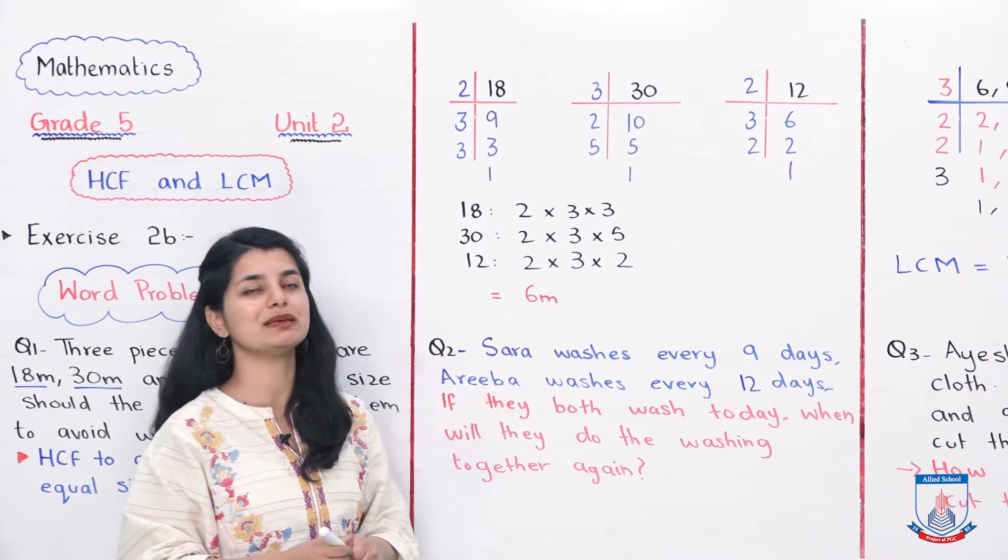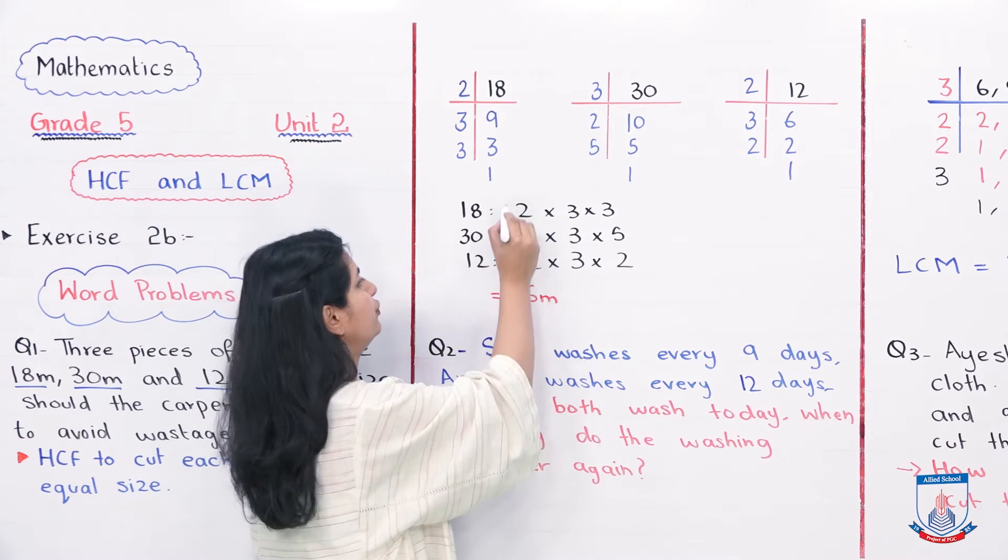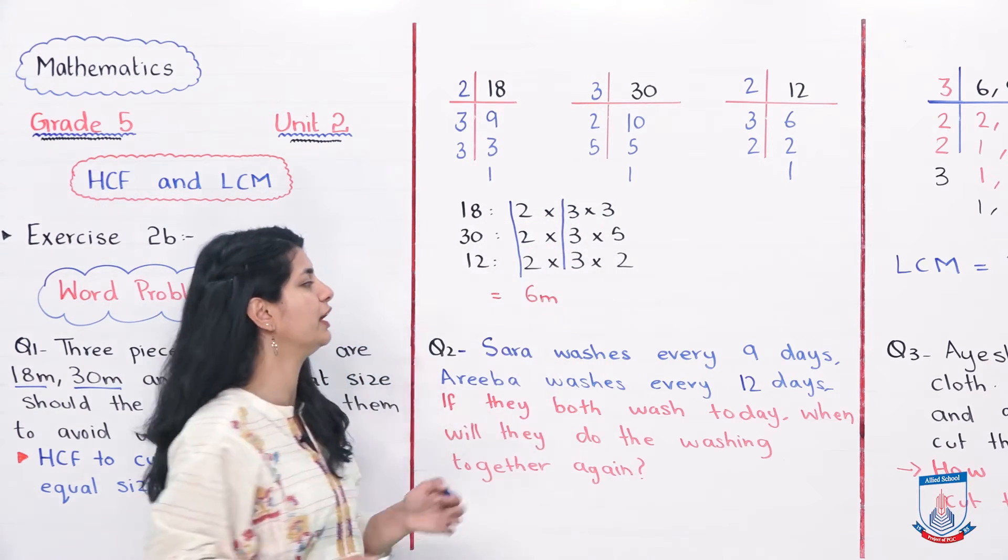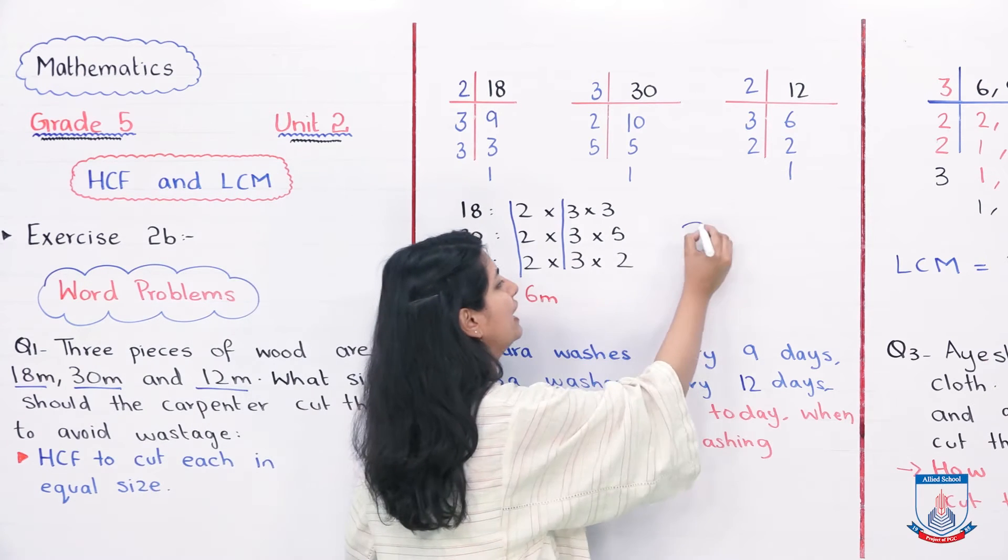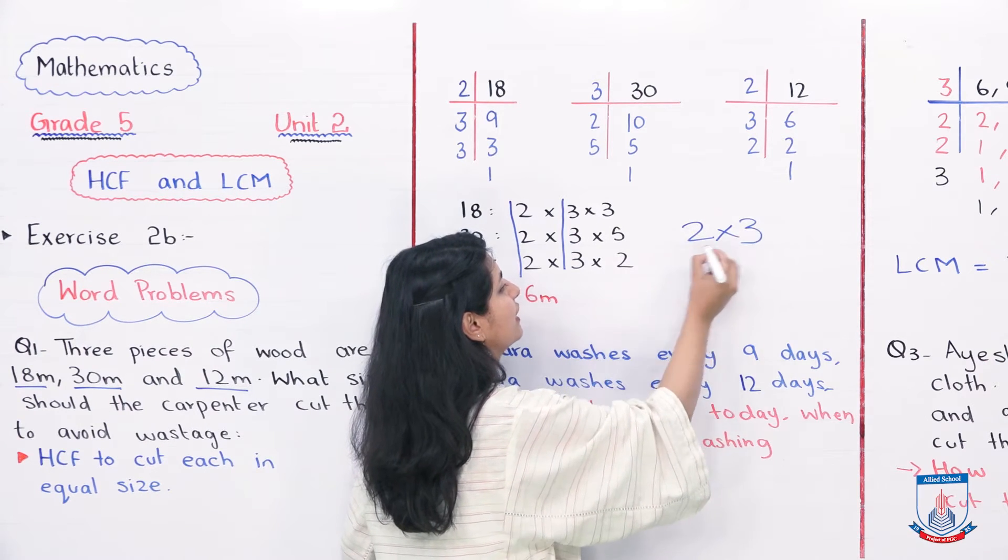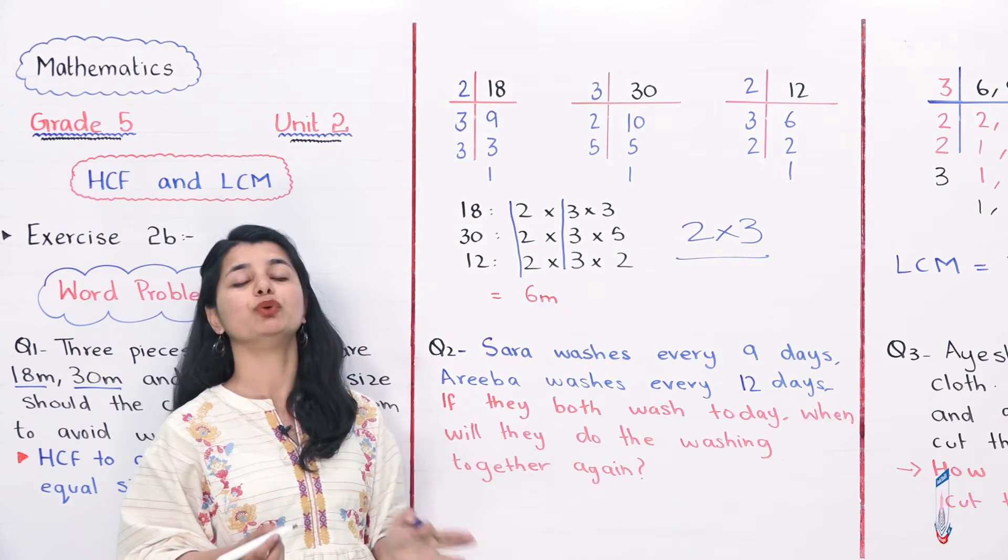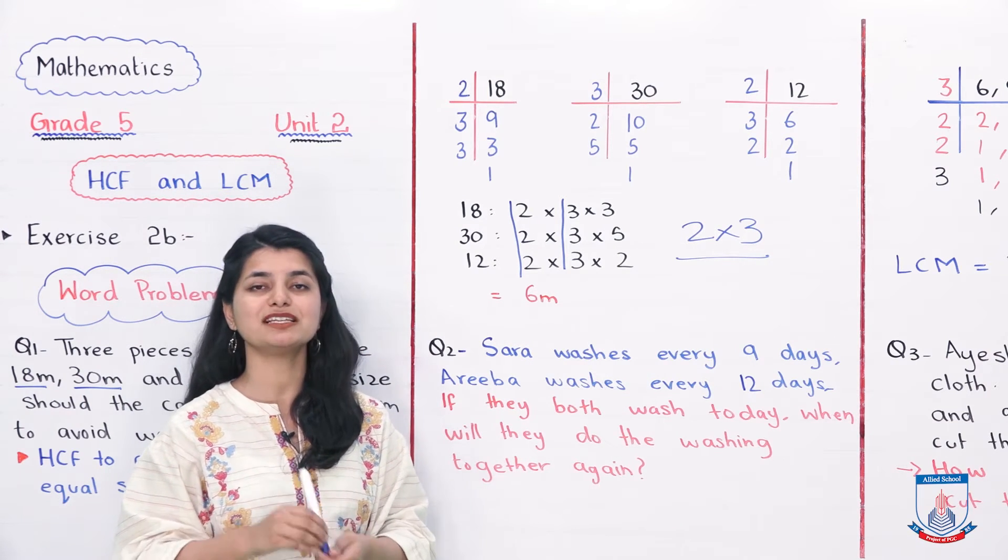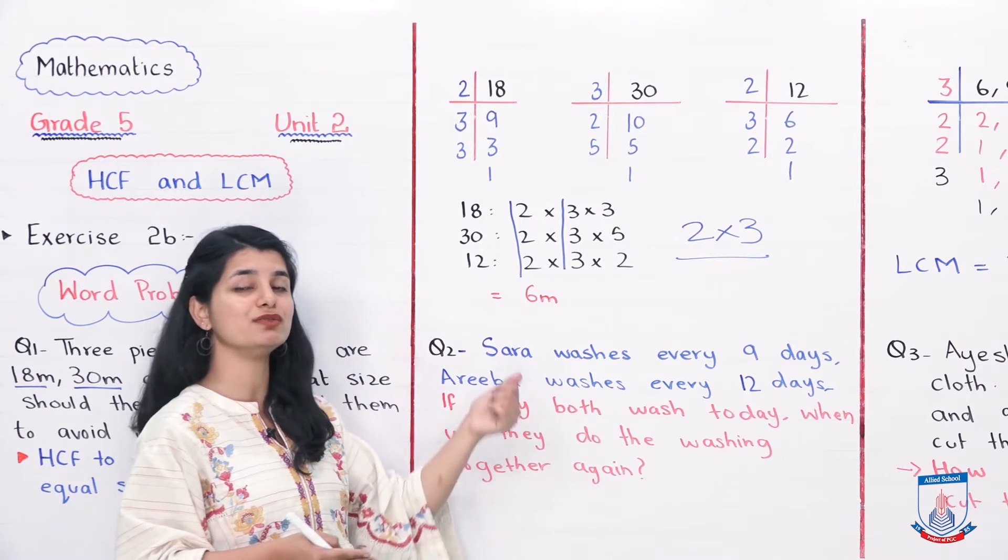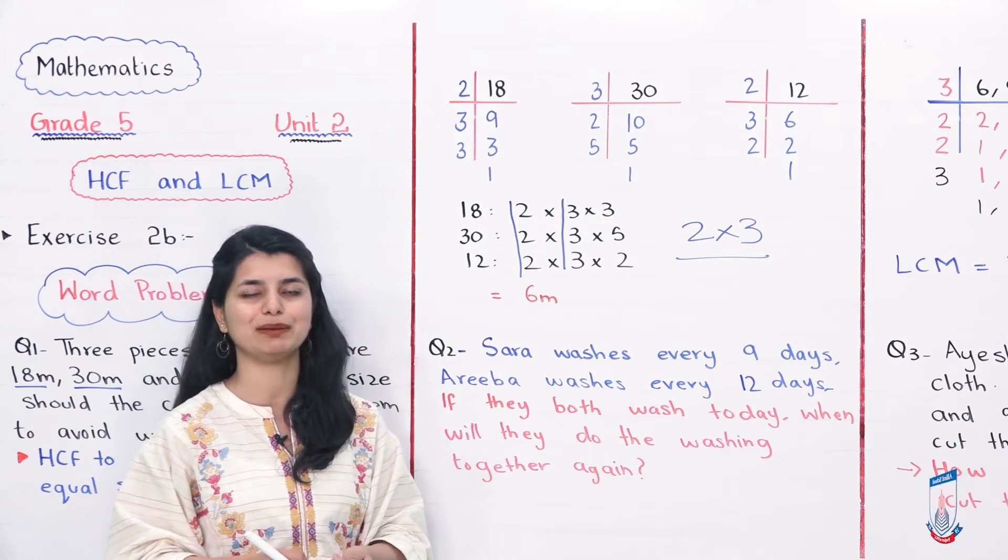The common factors are 2 and 3. So we multiply 2 × 3, which is our HCF. And our answer will be 6 meters. If we cut each piece in 6 meters, then we will cut all equally into 6 meters and no wastage will be left.